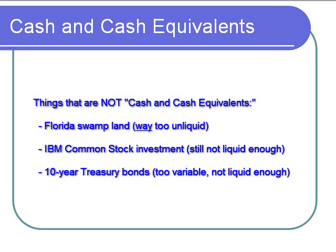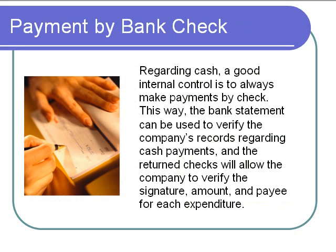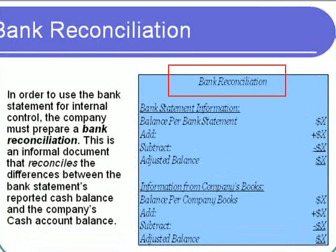Since cash is highly liquid and is used many times a day in hundreds and thousands of transactions, we have some grave internal control considerations and concerns about cash management. A good internal control over cash payments is to follow a policy of always paying by check. If we do this, then each month the bank will send us the bank statement, and we will be able to look at the return checks and verify our records regarding who the payee of the check was, who signed the check, whether this was a person authorized to write the check, and whether the amount is correct according to our books and records.